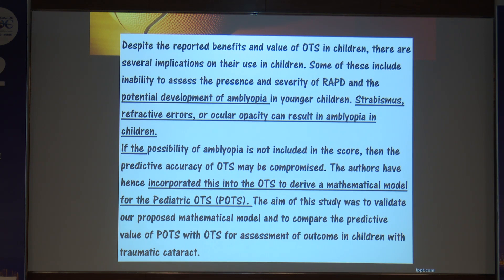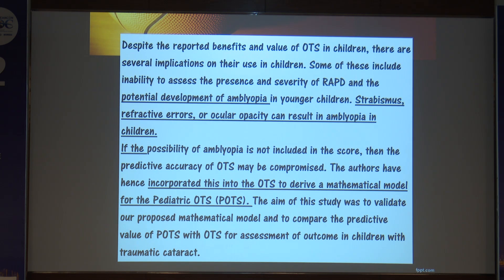Despite the reported benefits of OTS, it often performs poorly in children because it does not account for amblyopia. Strabismus, refractive errors, or ocular opacities can result in amblyopia in children, and if this possibility is not included, the predictive accuracy of the OTS is compromised. The authors have therefore incorporated a mathematical model called the POTS — Pediatric Ophthalmic Traumatic Score — which helps compare predictive values for children and gives a reasonable assessment of outcomes including traumatic cataract.